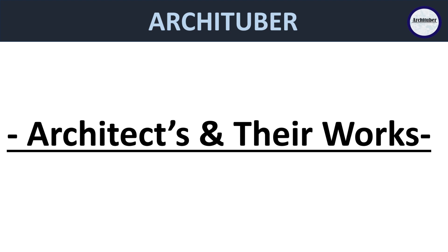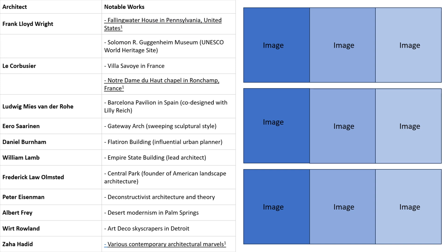This is the type of revision chart you can make — you can literally write the name of the architect and their notable works, and you can place the image of the architect and the work. It will be easier for you to remember.